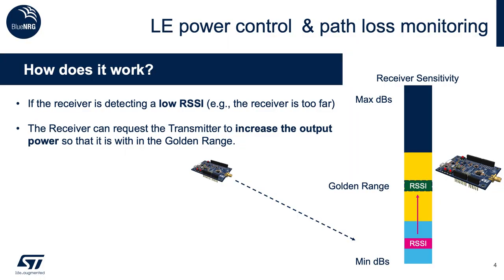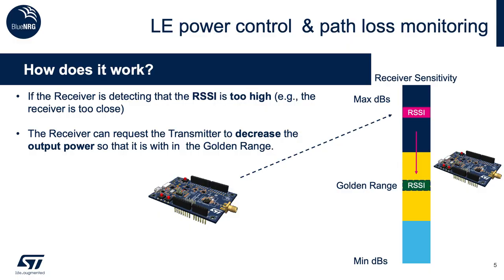Talking about the RSSI, ideally we want to avoid two scenarios. Number one, where the signal gets too low, resulting in a low SNR. This could put us in a situation where we cannot reach the sensitivity of the receiver device, so the receiver will not be able to demodulate the packets. The second scenario is on the flip side, when the output power is too high, so we are wasting power — meaning there is inefficiency in terms of power consumption and the battery lifetime of the transmitter will be shortened.